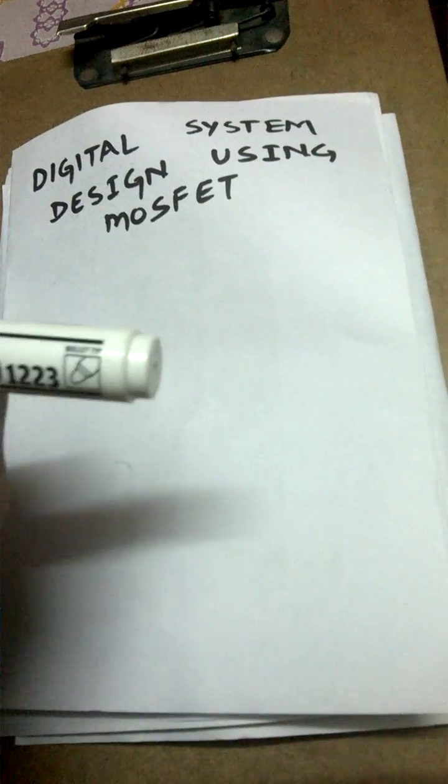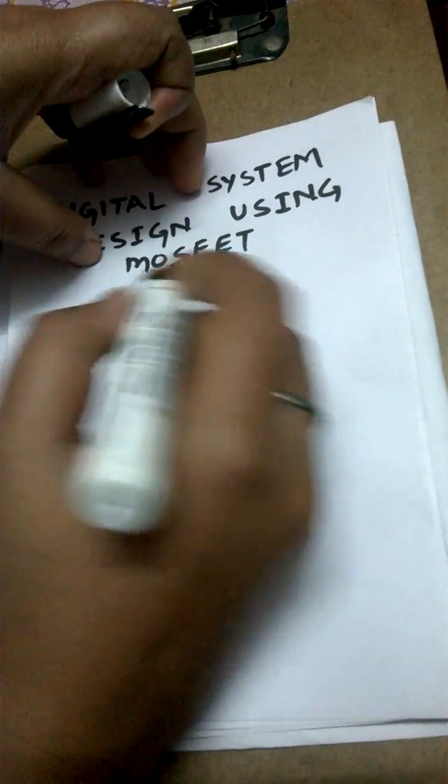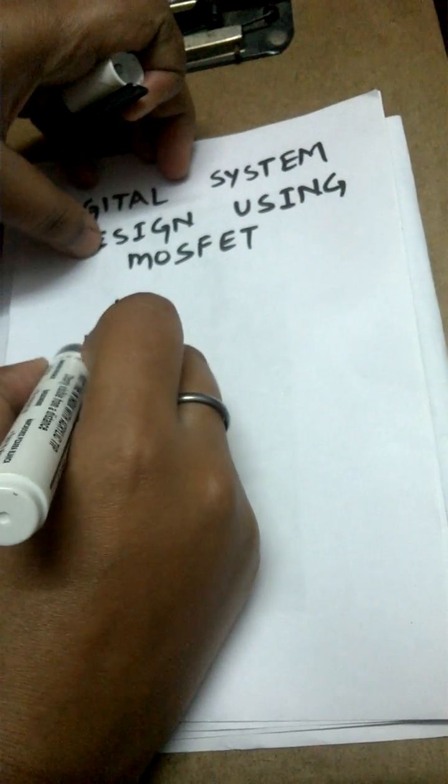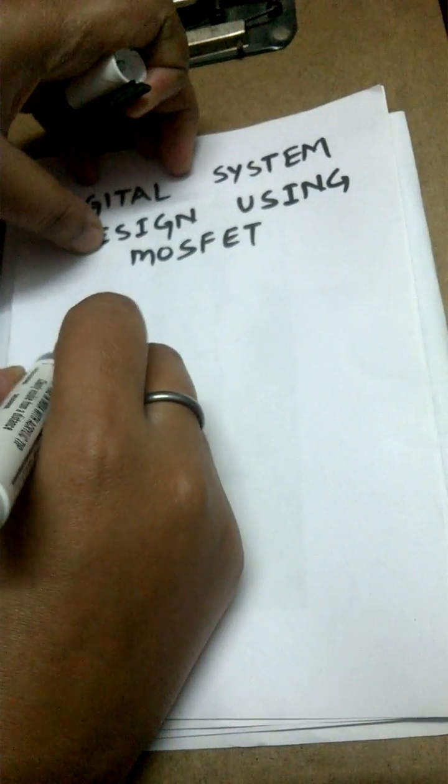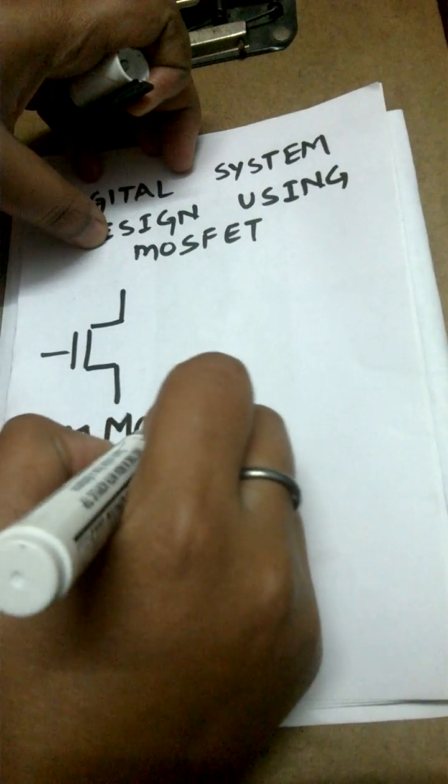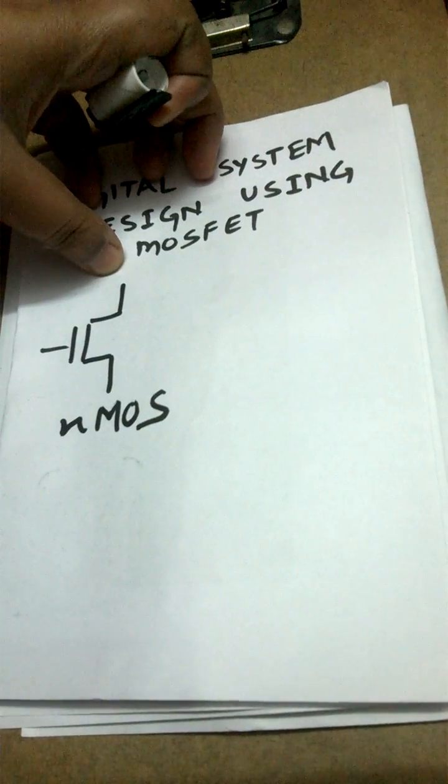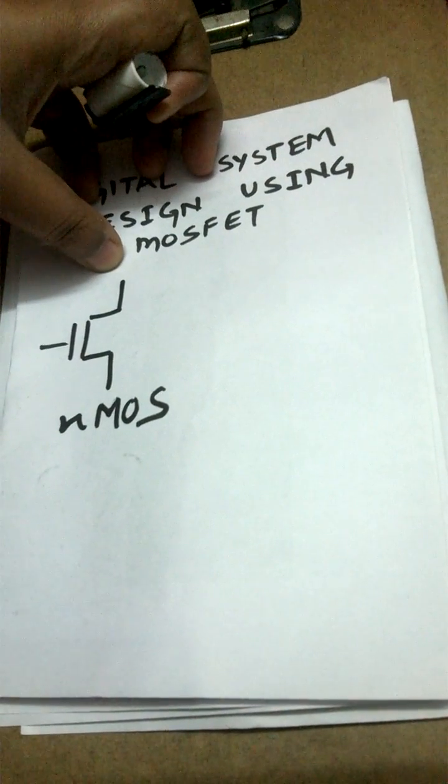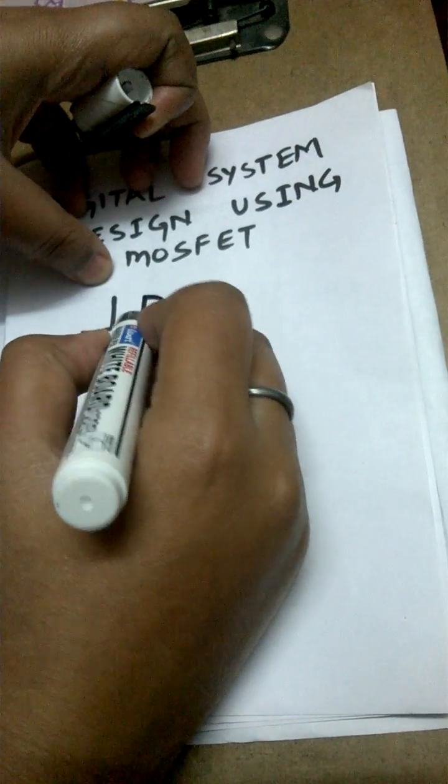As we all are aware, MOSFETs are of two types. One is the NMOS, that is depicted like this. NMOS has basically four terminals, out of which three are shown here. The upper one is the drain terminal, this one is the source terminal, and this is the gate terminal.